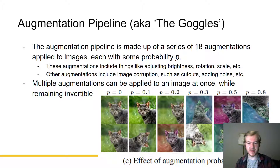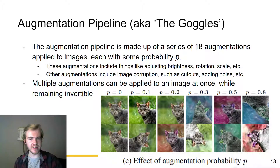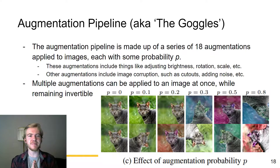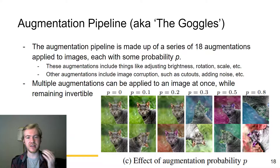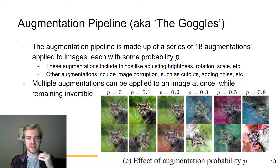The augmentation pipeline is made up of 18 augmentations, and multiple augmentations can be applied to an image at once while remaining invertible. If your probability is 0.8, you're having a lot of augmentations applied to the image, whereas if your augmentation probability is 0.1, you have much fewer.